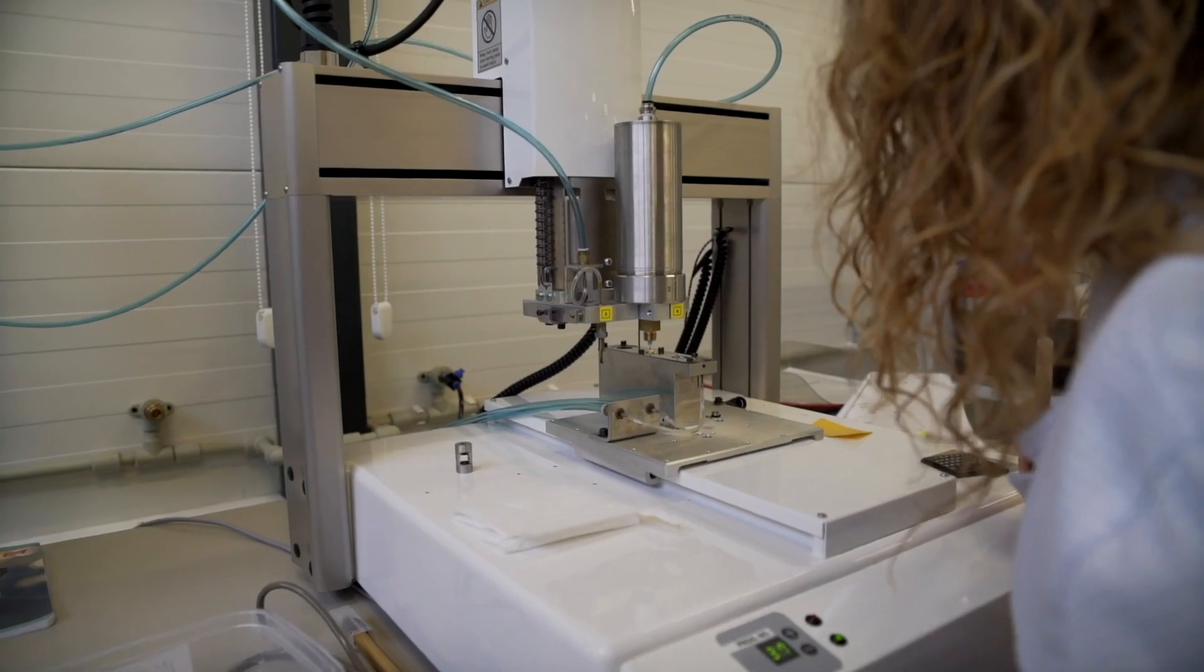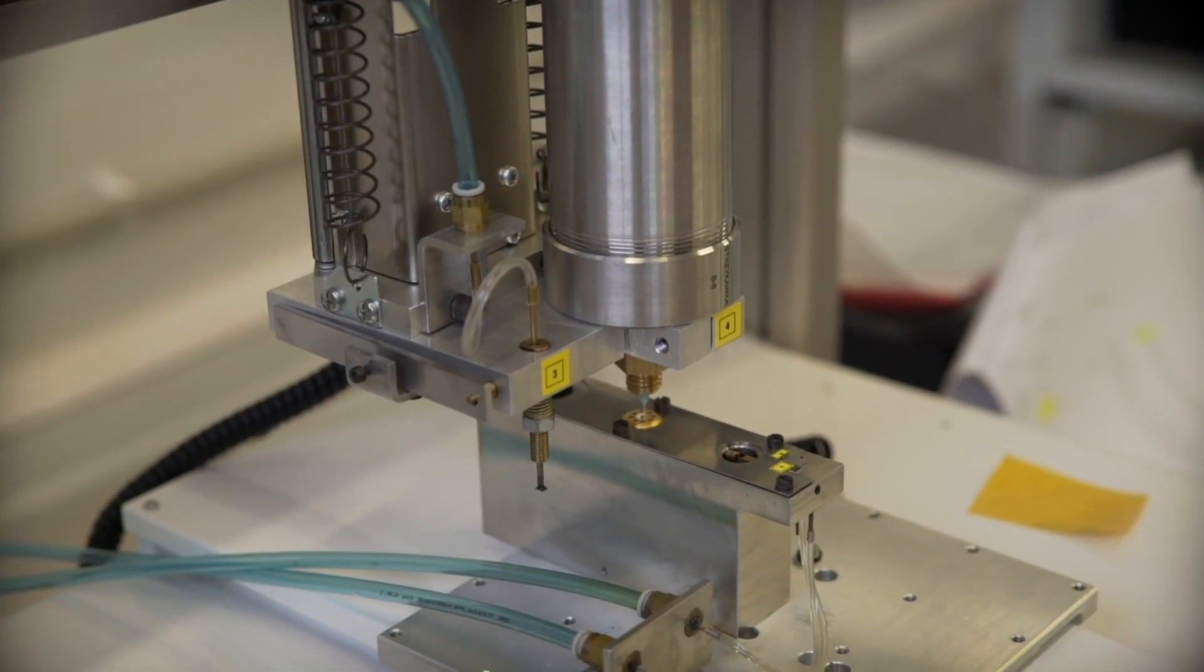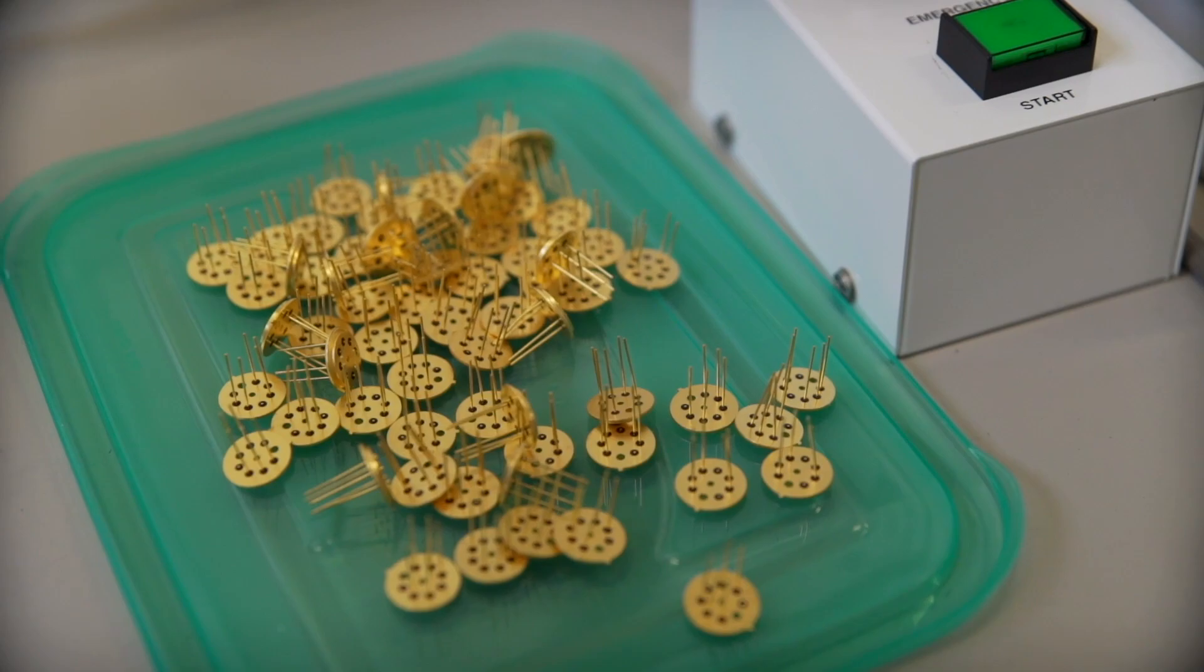It is time for assembly. A pressure sensor die, which is the key element of the whole device, is assembled to the sensor body.